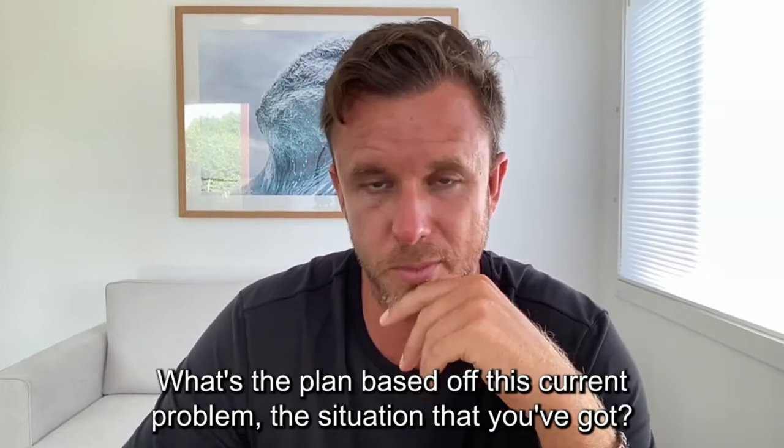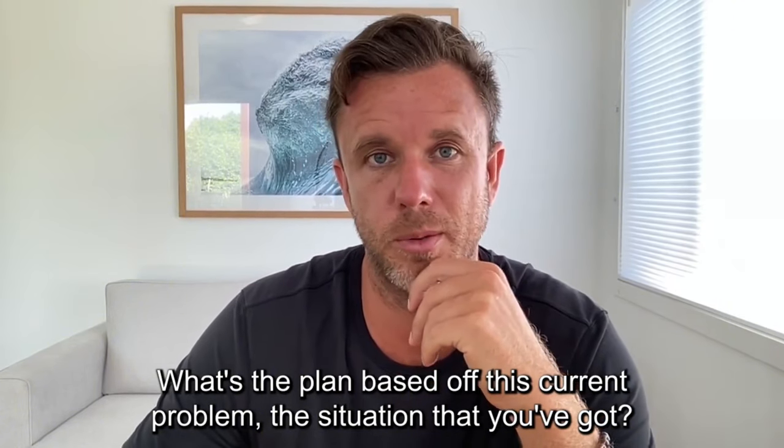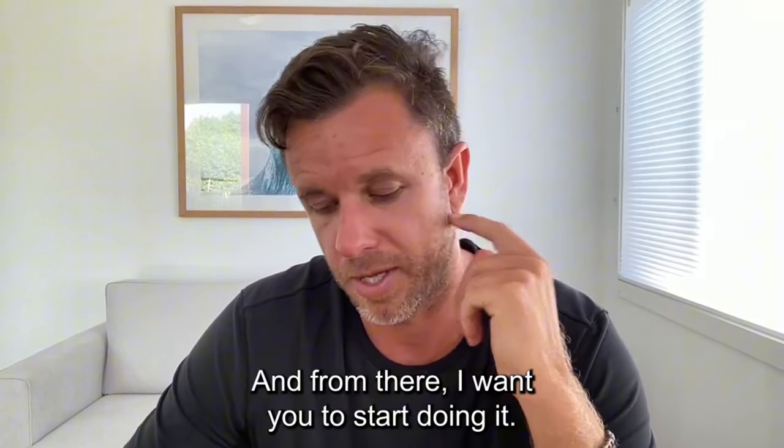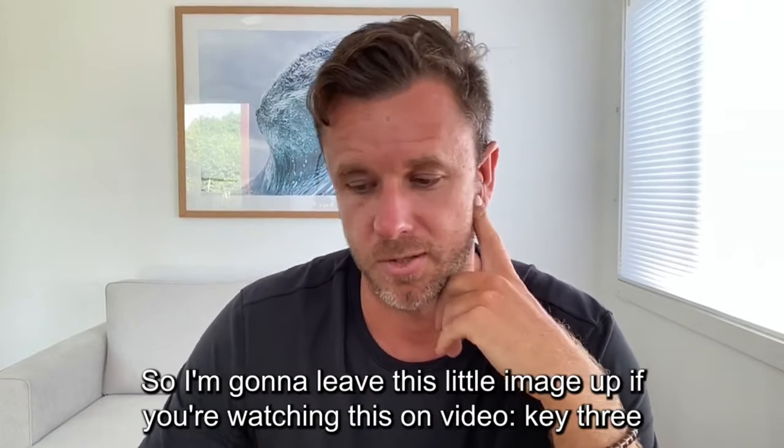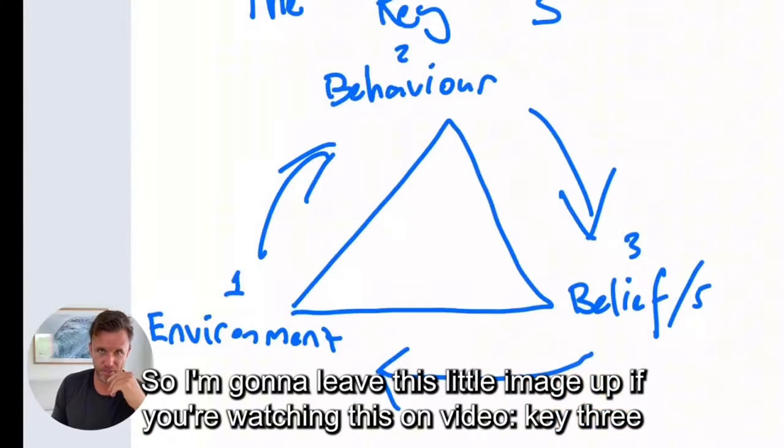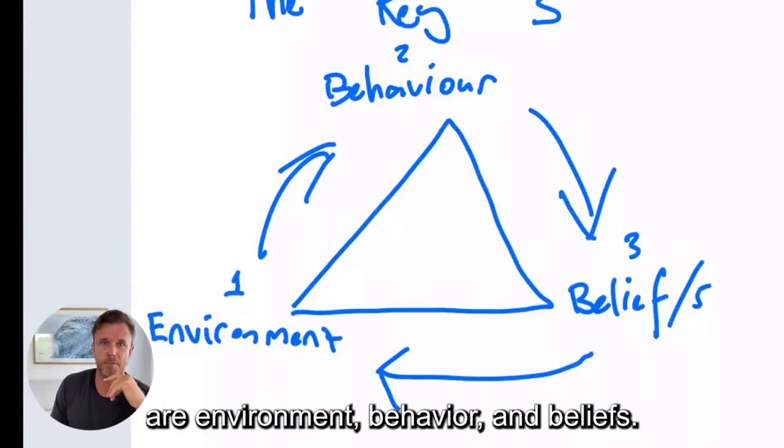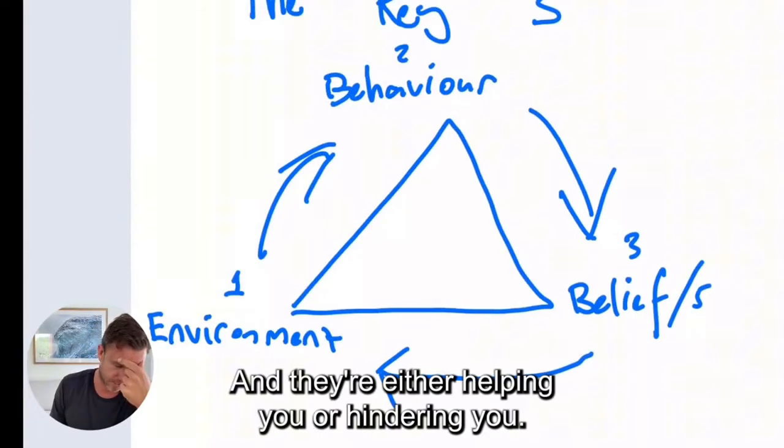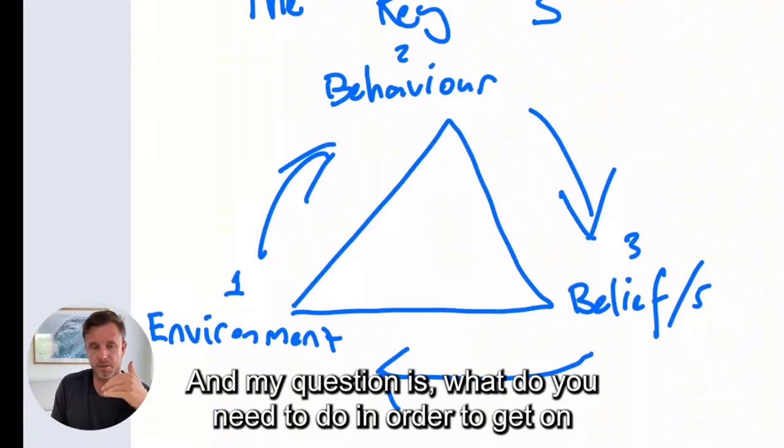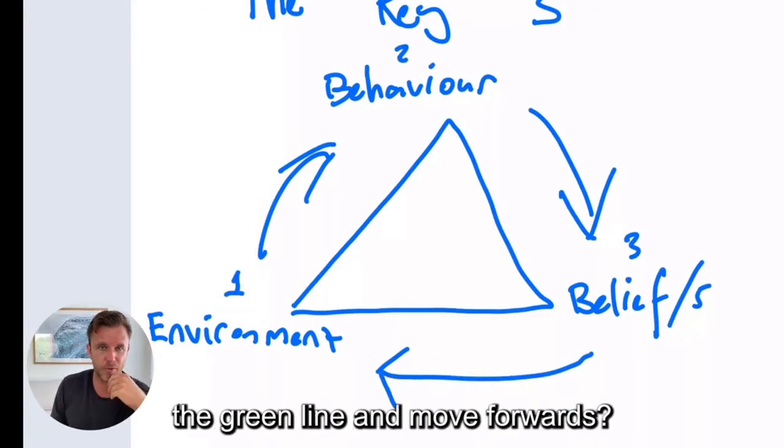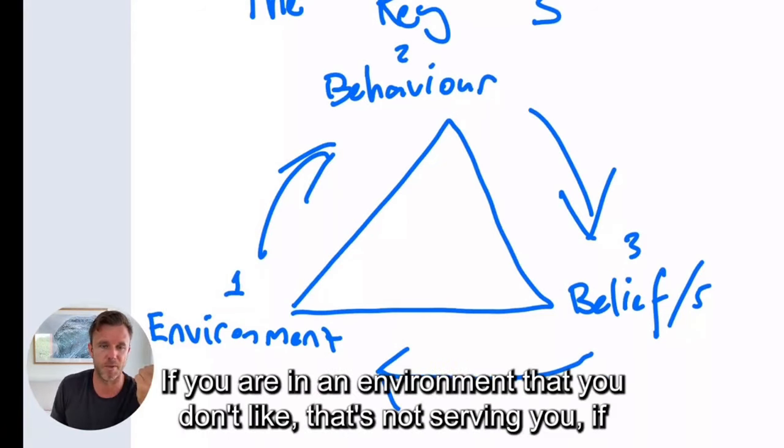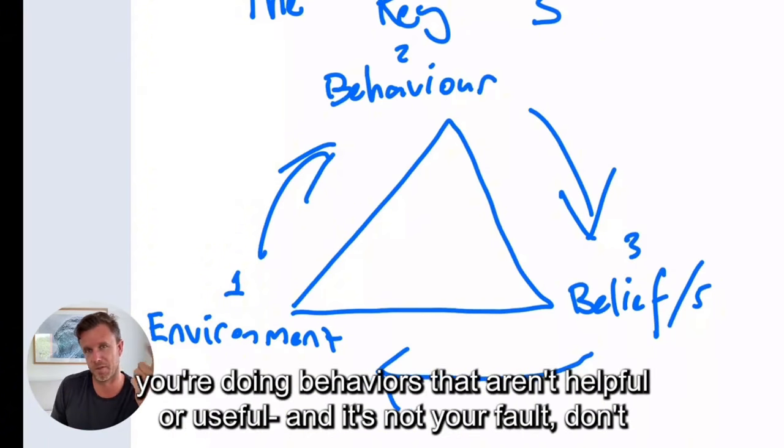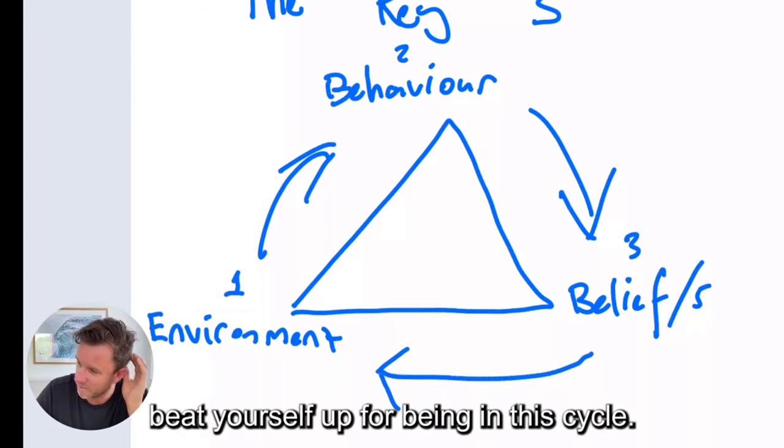You need to make a plan. What's the plan based off this current problem situation that you've got? And from there, I want you to start doing it. So we're going to leave this little image up. If you're watching this on video, key three are environment, behavior and beliefs. And they're either helping you or hindering you. And my question is, what do you need to do in order to get on the green line and move forwards? If you're in an environment that you don't like, that's not serving you, if you're doing behaviors that aren't helpful or useful, it's not your fault. Don't beat yourself up for being in this cycle.